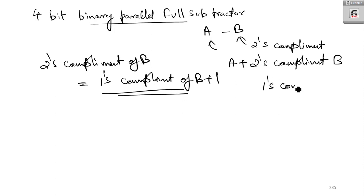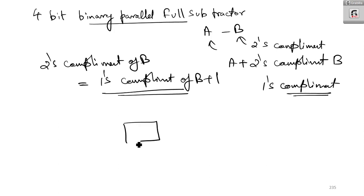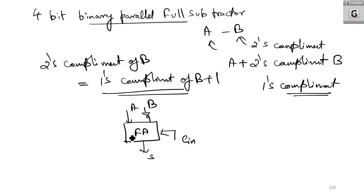One's complement means you have to take the one's complement of B and add it. If you are having a single stage of full adder, A should be one input and B should be complemented and given as the other input. Again, what we have is C-in; here what we have is B-bar; here we will get the sum; and here we will get the C-out.